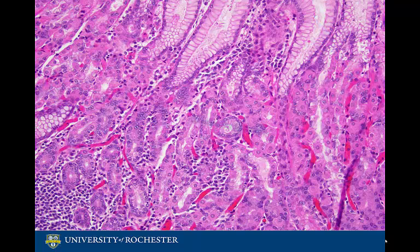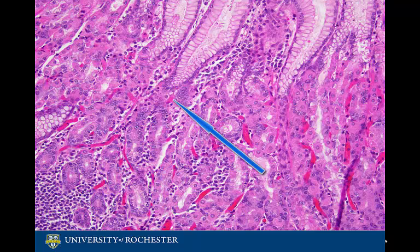Parietal cells are located in the body and fundus predominantly. These cells secrete hydrochloric acid and intrinsic factor, both of which are necessary for B12 absorption.